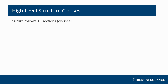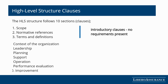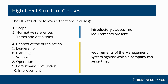The high-level structure consists of 10 sections, or clauses. The first three clauses are introductory and include key definitions related to the standard. The last seven contain the specific requirements for the relevant management system against which a company can be certified. All sections are present in the new standard editions; however, each management system standard introduces its own concepts and subject-specific requirements, especially in section 8, which deals with operational activities.